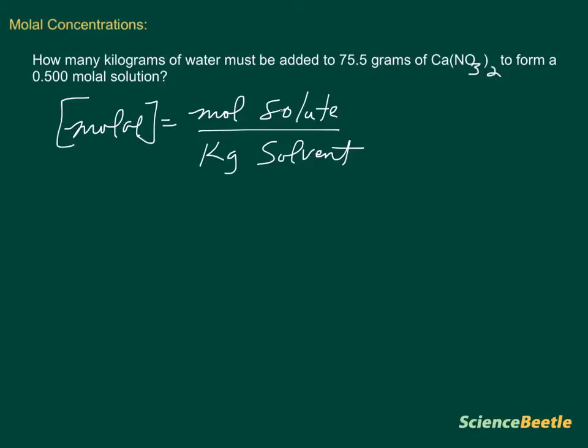The problem reads as follows: How many kilograms of water must be added to 75.5 grams of calcium nitrate to form a 0.500 molal solution? The important part here is that we've got 75.5 grams of calcium nitrate, we've got a concentration there, and we want to know how many kilograms of water are needed.